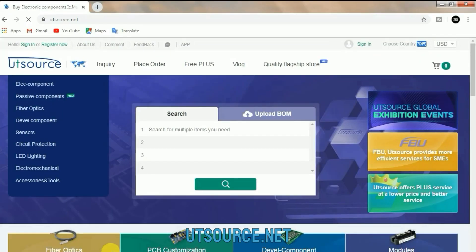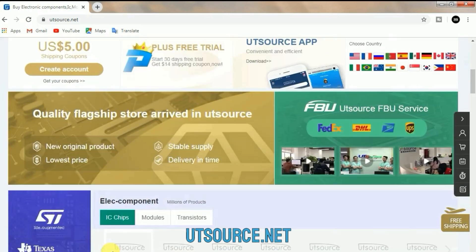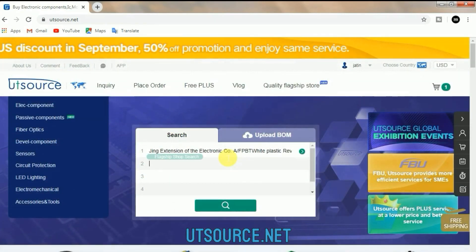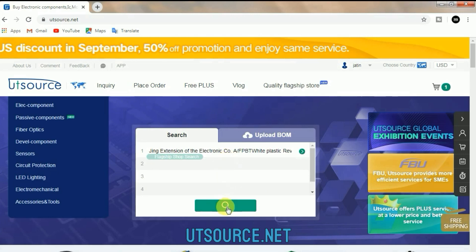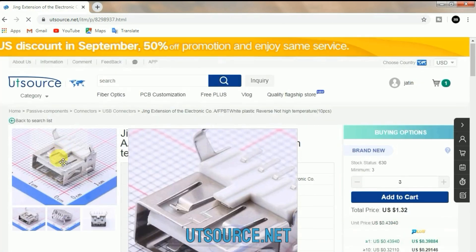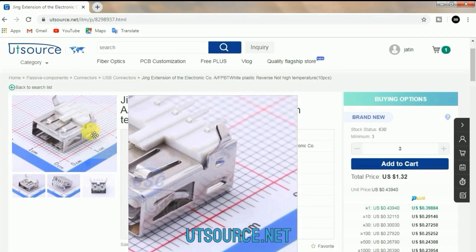This video is sponsored by UTSource.net. UTSource is a professional website where you can find components: LED, battery, resistor, modules, robotic arms, and other things you can find on the website.